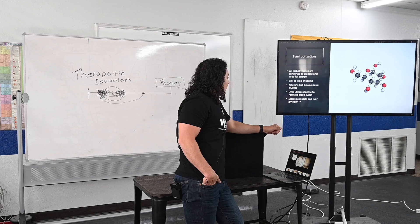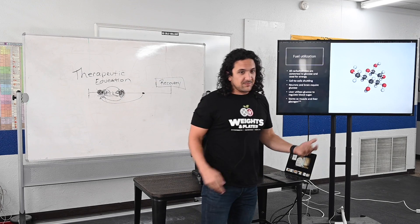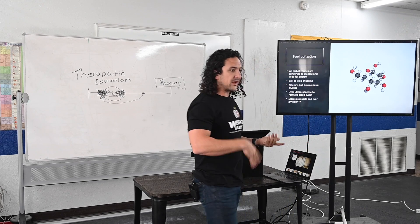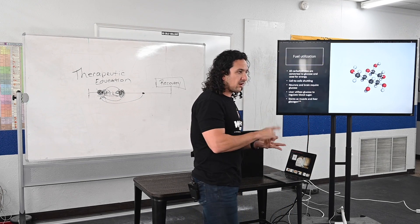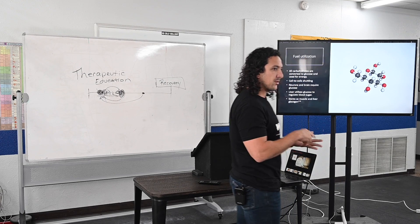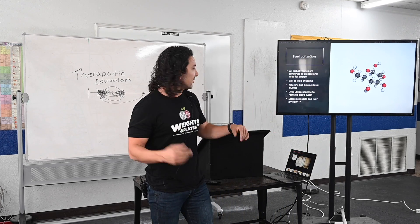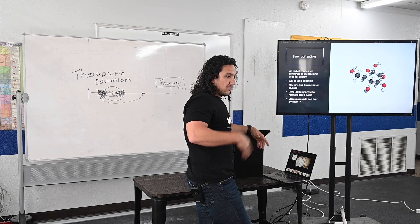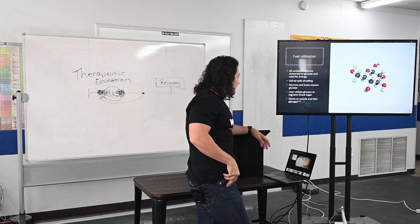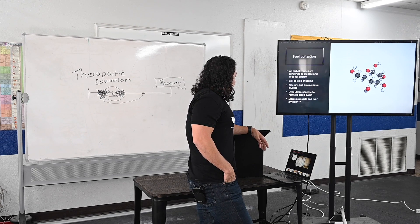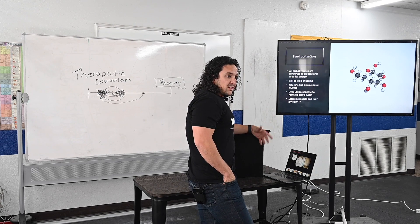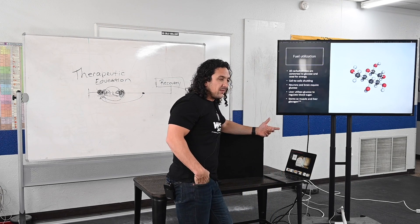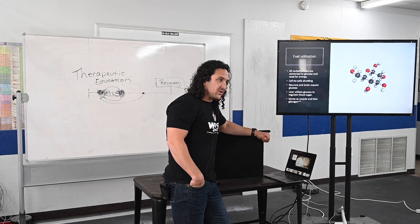All carbohydrates are converted to glucose and used for energy. When we're training, we break down carbohydrates in the form of glucose stored in the muscle, which is referred to as glycogen. One cell can also feed another with glucose. And the brain and neurons like to feed on glucose — you can use ketone bodies as well, but it's not as efficient for fuel utilization.